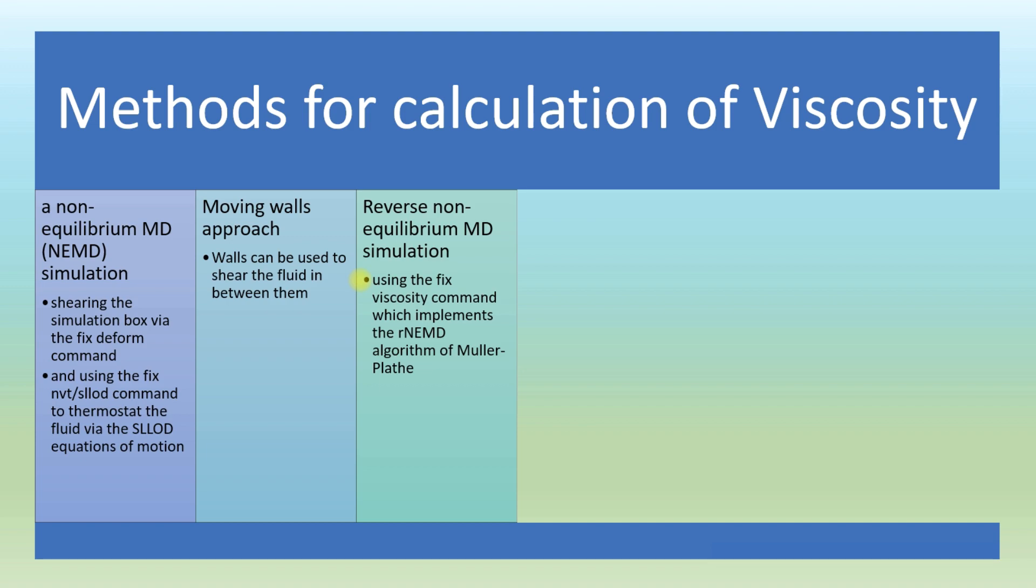The third method is reverse non-equilibrium molecular dynamics simulation using the fix viscosity command, which implements the reverse NEMD algorithm of Müller-Plathe. Momentum in one dimension is swapped between atoms in two different layers of the simulation box in a different dimension. This induces a velocity gradient which can be monitored via the fix ave/chunk command.